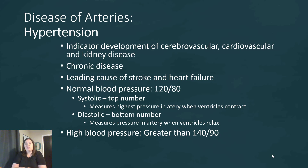A normal blood pressure should be about 120 over 80. The top number, 120, is the systolic pressure, which measures the highest pressure in an artery when the ventricles are contracted. The diastolic, or bottom number, measures the pressure in the artery when the ventricles are relaxed. It's not zero because there's still blood in those vessels. In women or more petite individuals, average blood pressure may be slightly lower at 110 over 70, but 120 over 80 is considered normal.